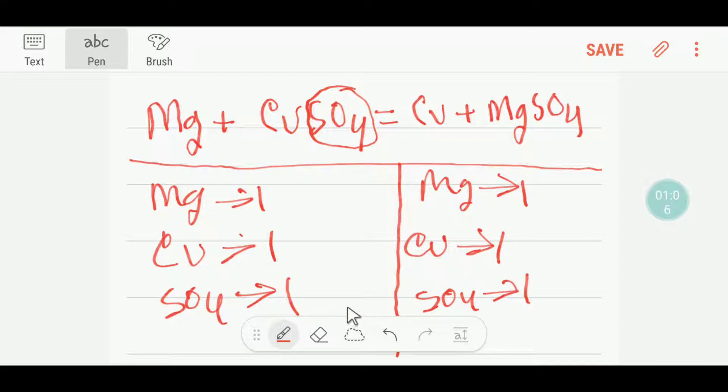On the reactant side you have one sulphate, and on the product side one sulphate. So actually, this equation is already balanced. Thank you for watching this video. Be well.